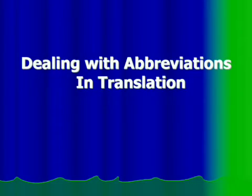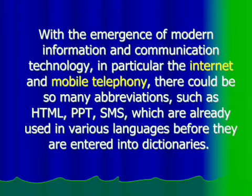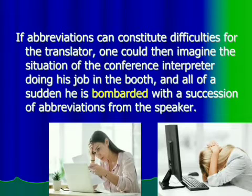Good day, dear students. Let's begin our next lecture. Today we are going to talk about abbreviations in translation. I hope you will get some useful information from today's lecture. As you know, the lexicon of language grows at a constant rate, which Tony estimated at approximately 600 words per year. That means yearly, 600 words appear in different languages as a result of technical development in various spheres. For example, the internet and mobile telephony — each year a lot of new knowledge enters our language in these fields.